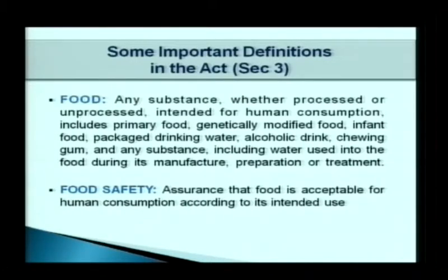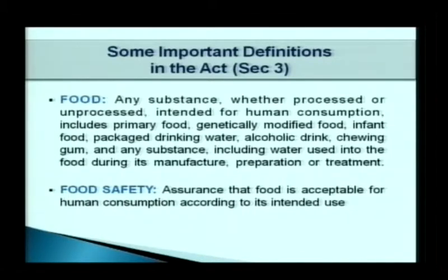Genetically modified food is not yet cleared by the Ministry of Environment and Agriculture, but it is expected to be allowed in India. Infant food, packaged drinking water, and alcoholic drinks are also covered — alcoholic drinks were earlier under excise and not covered under the PFA Act, but they are covered under the FSS Act. Chewing gum and any substance including water used in food during its manufacture, preparation or treatment is also covered.